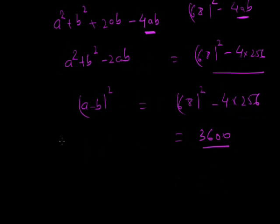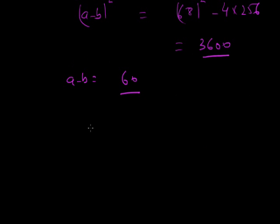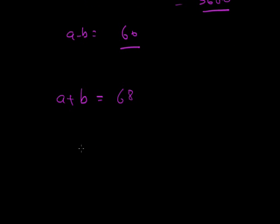So A − B = 60 and A + B = 68. Solving these two equations simultaneously gives A = 64 and B = 4. Hence the two numbers are 64 and 4.